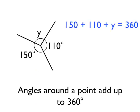Using that angle fact, we know that 150 + 110 + Y equals 360 degrees. Another way of thinking of this is if we start with 360 degrees, take away 150, take away 110, we'd be left with the size of angle Y.